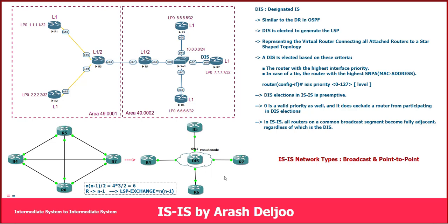Assume we have four routers and every router needs to exchange link states only with the DIS - this virtual router. This is more efficient. The DIS has two main functionalities. The first is helping routers on a broadcast segment to synchronize - I will cover that in future videos. The second functionality is representing the broadcast segment in the link state database as a standalone object called the pseudo-node.